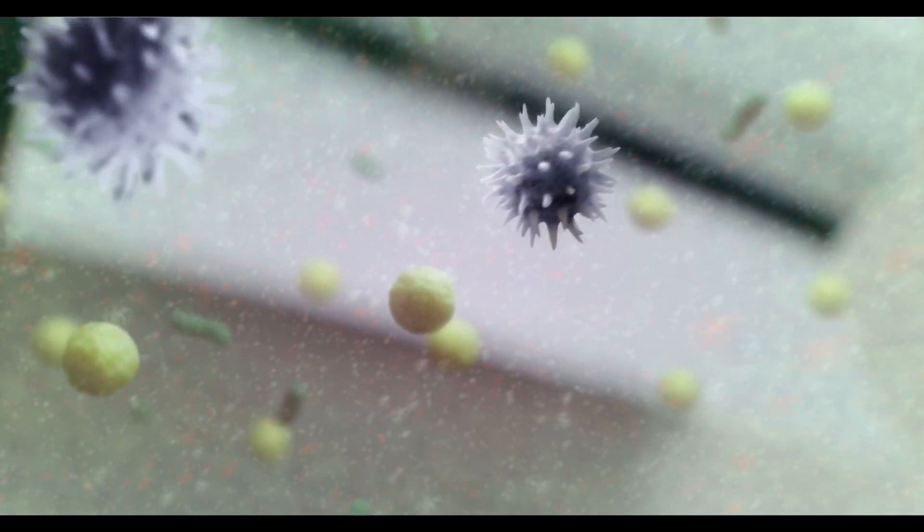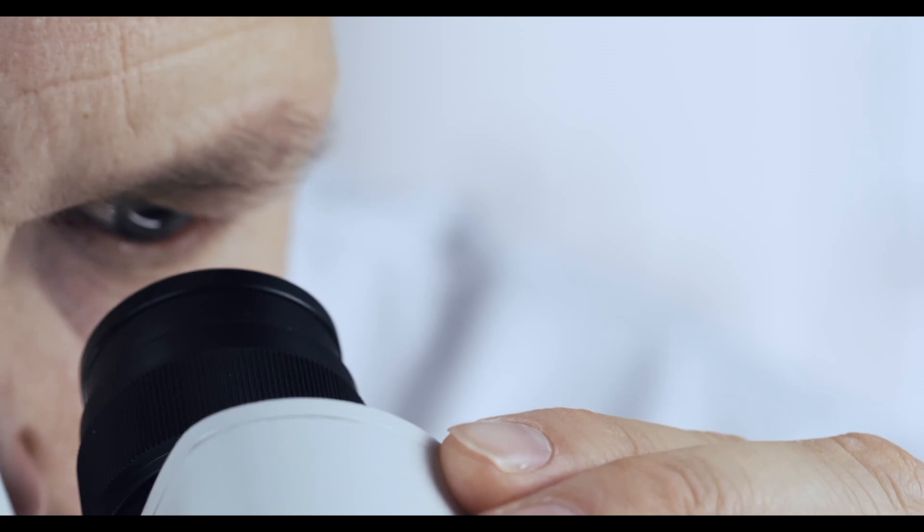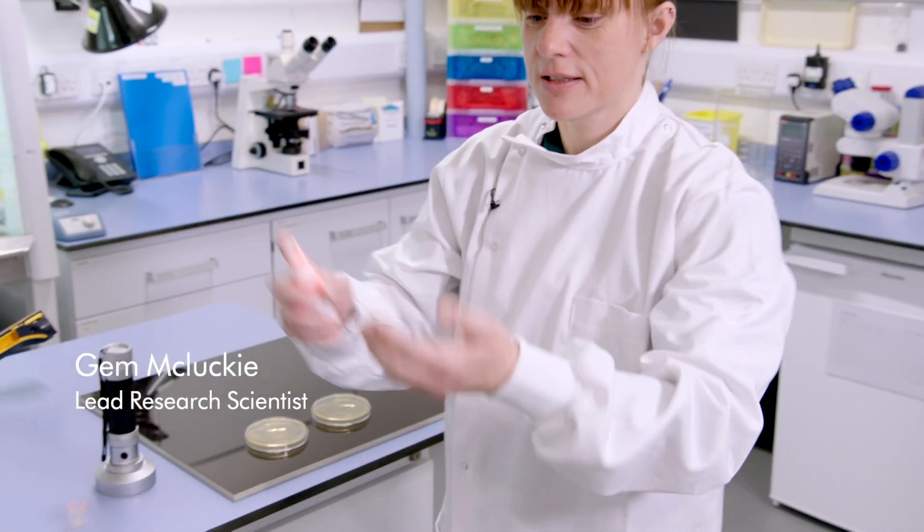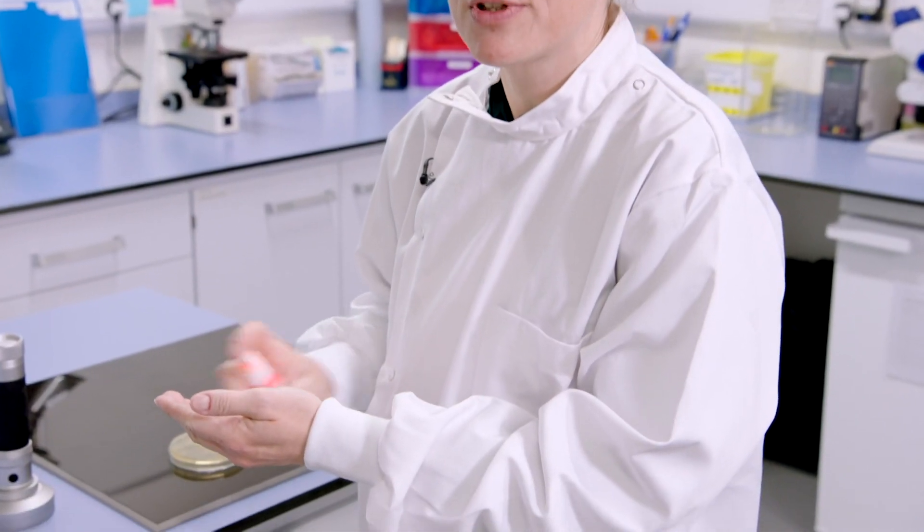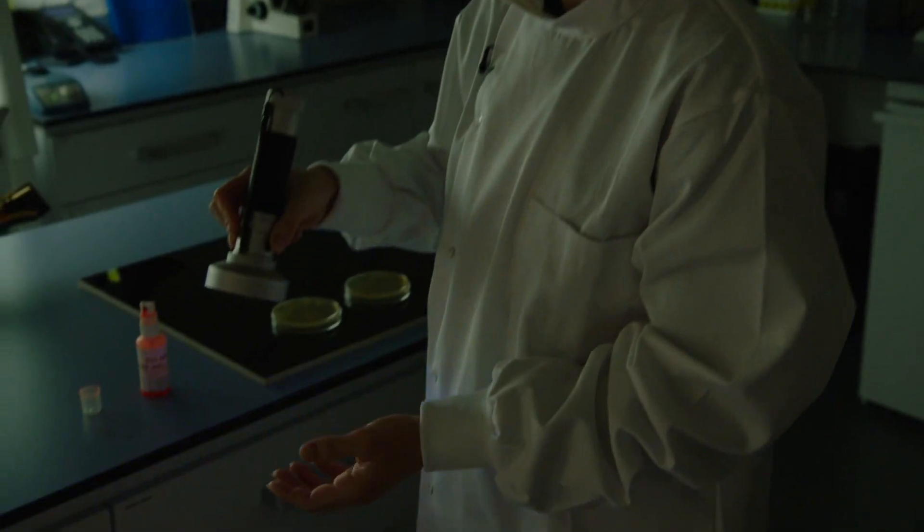Microbes are invisible to the naked eye. If I put this solution on my hands—it's called glow germ—and put it under a UV light, it mimics what microbes look like.